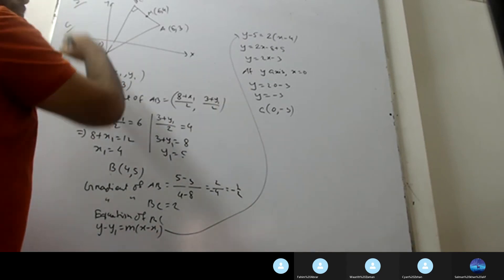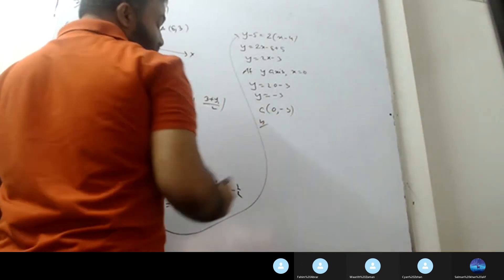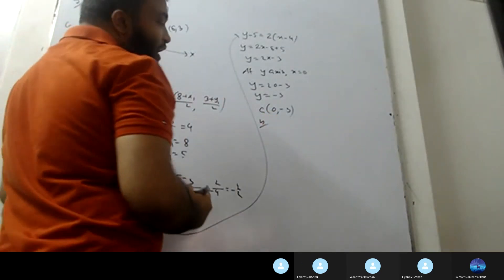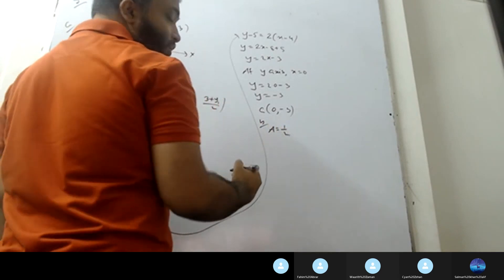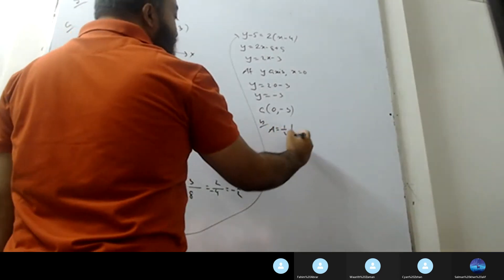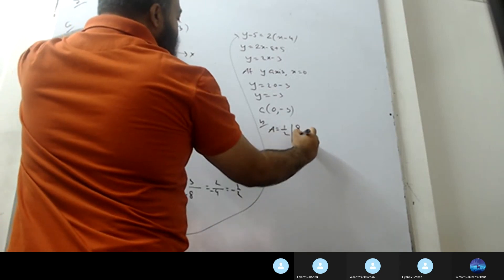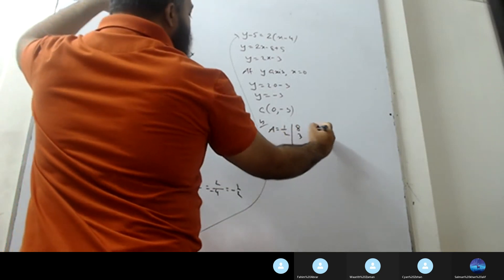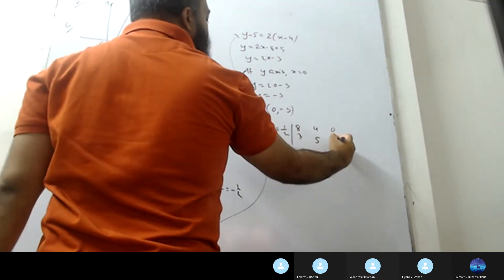Now to find the area of triangle ABC. The coordinates are: A is (8,3), B is (4,5), C is (0, minus 3).